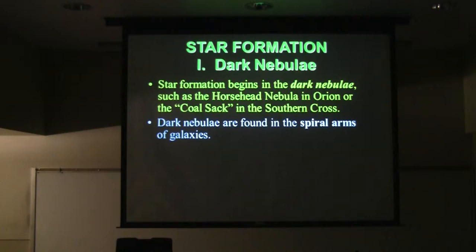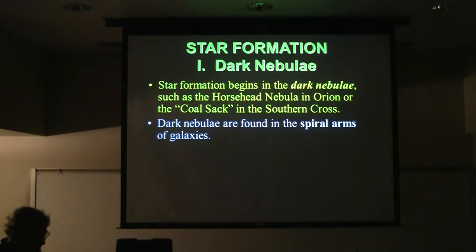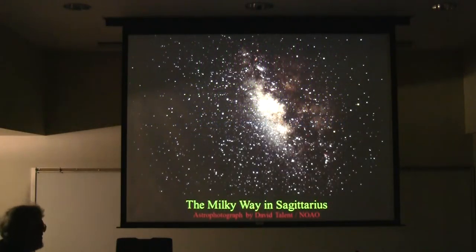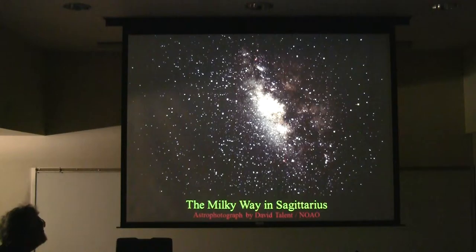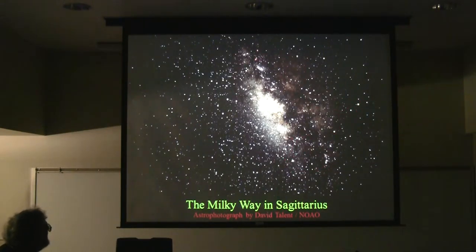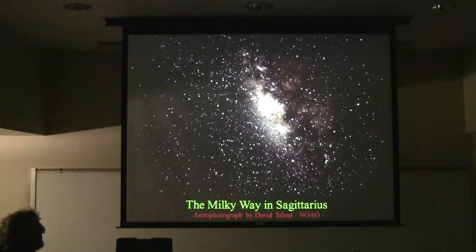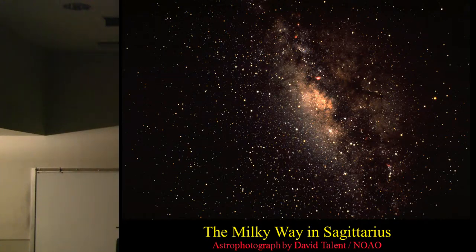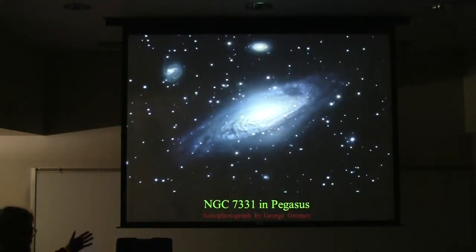The dark nebulae are found in the spiral arms of galaxies where we are, including the Milky Way. Here's a picture towards the center of the Milky Way — there's Scorpius with the fishhook tail, Sagittarius with the teapot, and right towards the center of the galaxy, all these dark areas are dark nebulae that obscure the light from stars in the background.